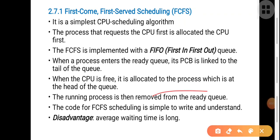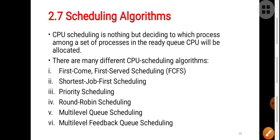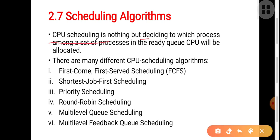In this class we will see some scheduling algorithms, also called CPU scheduling algorithms. CPU scheduling is nothing but deciding to which process, among n number of processes in the ready queue, the CPU will be allocated. It is a decision about which particular process among n number of processes the CPU will be allocated to.